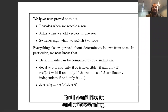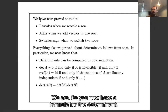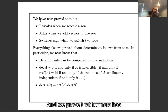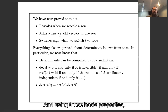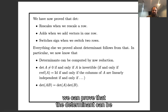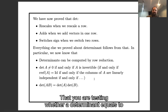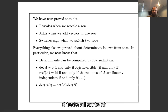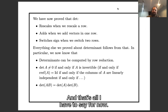I don't like to end on a warning, so let me end on a happy note. You now have a formula for the determinant, and we've proved that formula has the basic properties that make determinants important. Using those basic properties, we can prove that determinants can be computed by row reduction, that testing whether a determinant is zero tests all sorts of important properties of your matrix, and that the determinant multiplies when you multiply matrices.